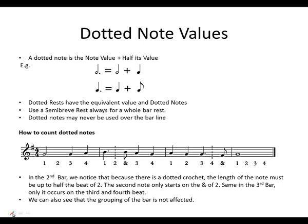Dotted note values. As I explained in the previous page, dotted note values are the note value plus half its value. Example, dotted minim will equal to minim plus half its value, which will be the crotchet. Then dotted crotchet will be equal to a crotchet plus half its value, which is the quaver.